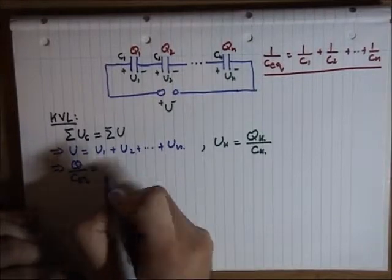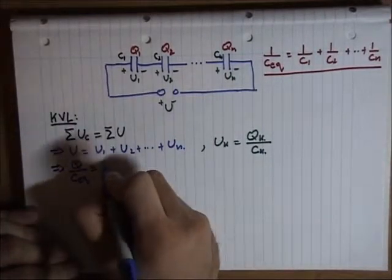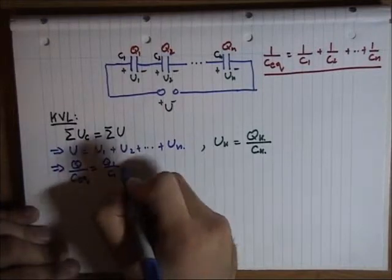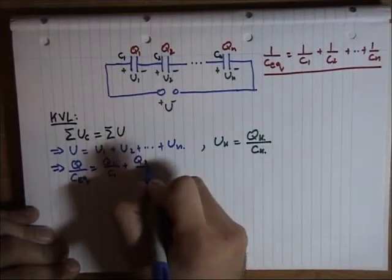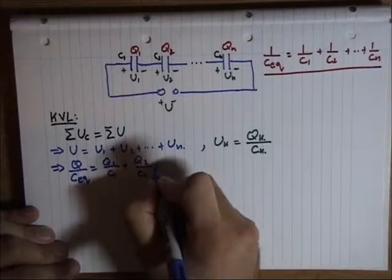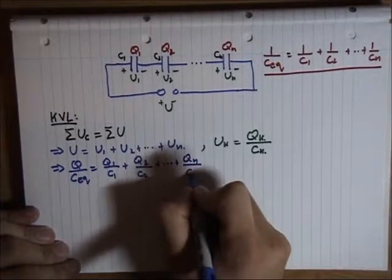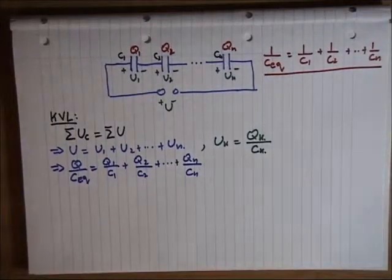It's going to be equal with Q1 over C1 plus Q2 over C2 plus Qn over Cn.